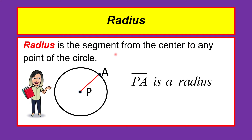A radius is a segment from the center to any point on the circle. This is circle P. The center of the circle is point P. We have point A on the circle. If we connect point P and point A using a segment, we have a radius. P-A is a radius because it connects the center and a point on the circle.